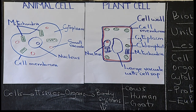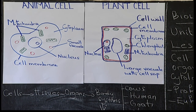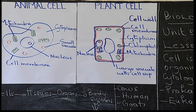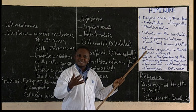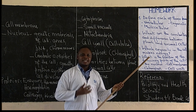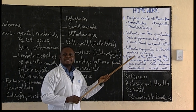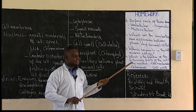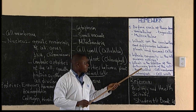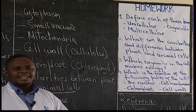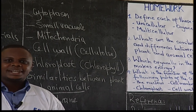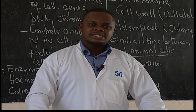Dear students, we have seen plant and animal cells and their different parts. Here is your homework. Question one: define the terms unicellular, multicellular, and organelle. Question two: what are the similarities and differences between plant and animal cells? Question three: which organelle is the powerhouse of the cell? Question four: what is the function of the nucleus, cell membrane, chloroplast, and cell wall? Thank you very much for your active participation. Enjoy the rest of the day.